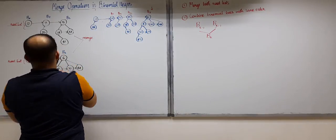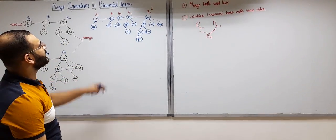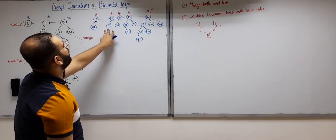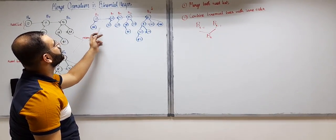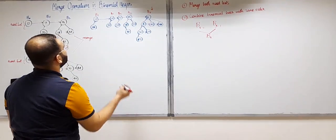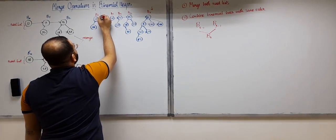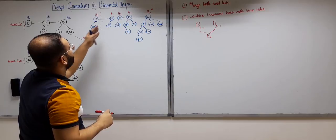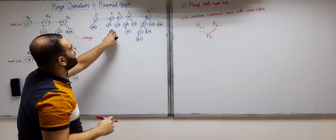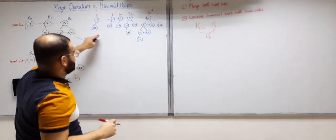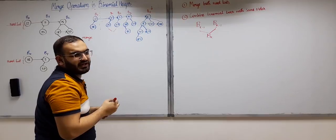Now we have three B1 trees in the list. When there are three trees of the same order, we leave the first one and merge the last two. Merging two B1s produces a B2, not another B1, so the first B1 remains untouched.